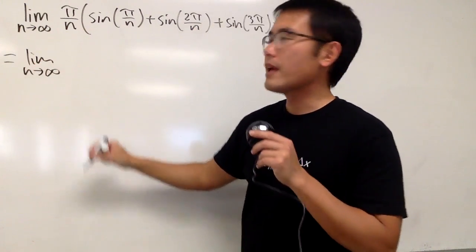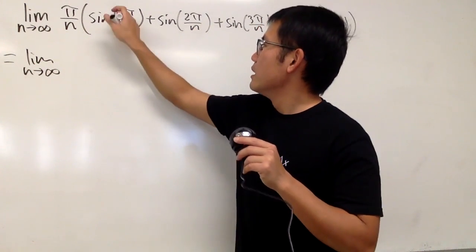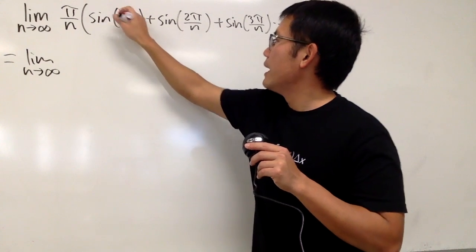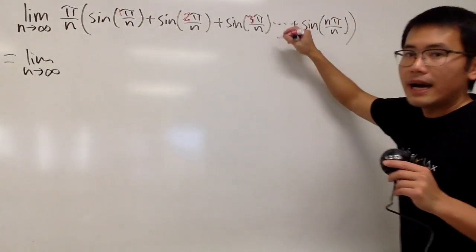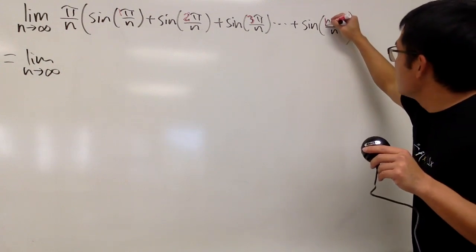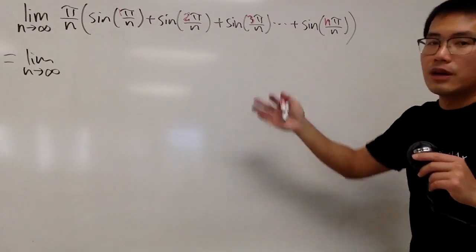This is the limit as n goes to infinity, and notice that this is just 1π, and this is 2π, and 3π, and then 4π, and so on, and here we have the nπ, and everything else is the same.